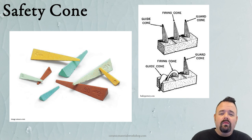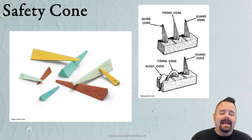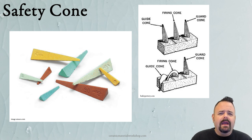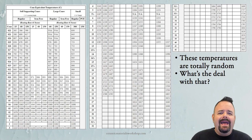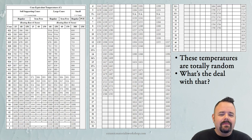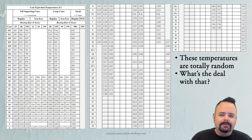Cones work great — they're simple and easy, and they make sense. But there's something really confusing when you look at the cones themselves: the temperatures they represent are completely and utterly random.